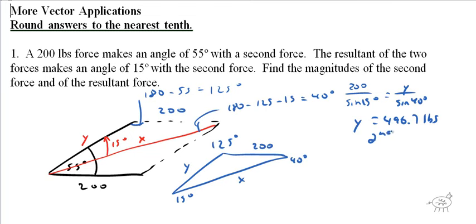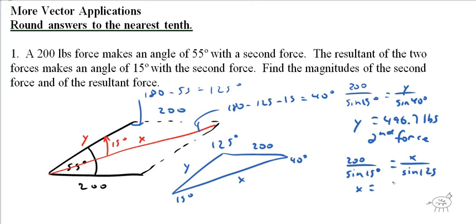The other one is 200 over sine of 15 degrees equals X over sine of 125 degrees. Cross-multiply and solve — we get X equals 633.0 pounds, and that's our resultant force. Pretty easy, right? Just remember the properties of parallelograms and you're good to go.